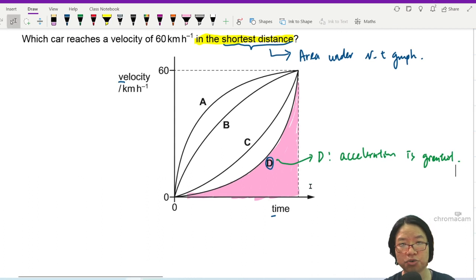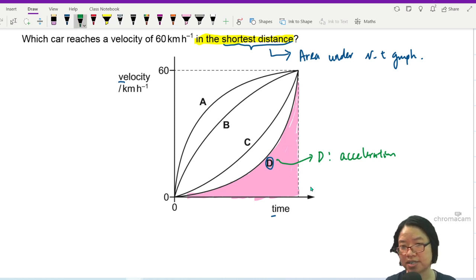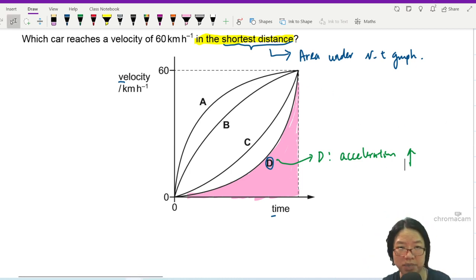So this increasing acceleration allows the car to reach the speed 60 km/h much more quickly than, let's say, A.